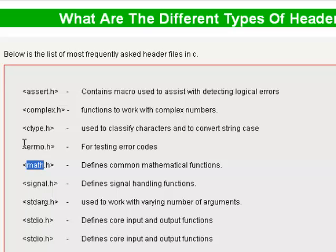Similarly there are other header files like ctype.h which contains the functions to classify the characters also convert the string into uppercase or lowercase. And the complex range contains the functions to work with the complex numbers in C language.